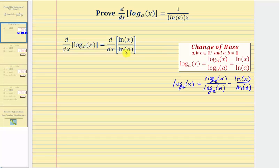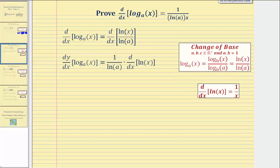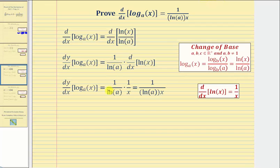Now for the next step, natural log a is just a constant, so we can write this as one over natural log a times the derivative of natural log x, and we just proved the derivative of natural log x with respect to x is equal to one divided by x, or one over x. And therefore we have one over natural log a times one over x.